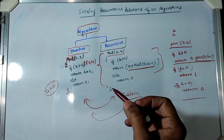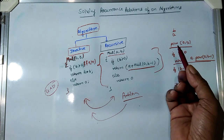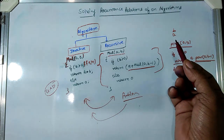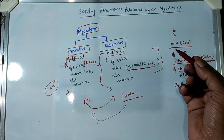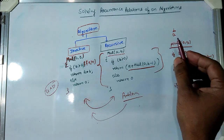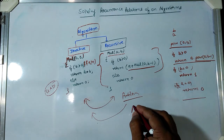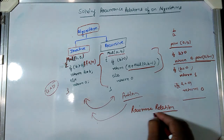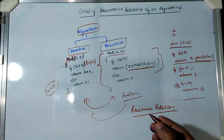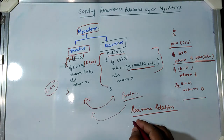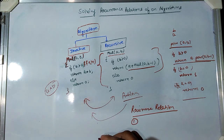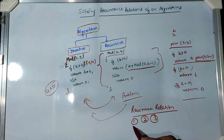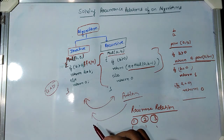This type of calling is called recursive calling and this type of algorithm is called a recursive algorithm. In the analysis of algorithms, we generally consider the recursive procedure to be analyzed. For the recursive algorithm we define a recurrence relation, and the most popular methods to solve it are: the substitution method, the recursion tree method, and the master's method.